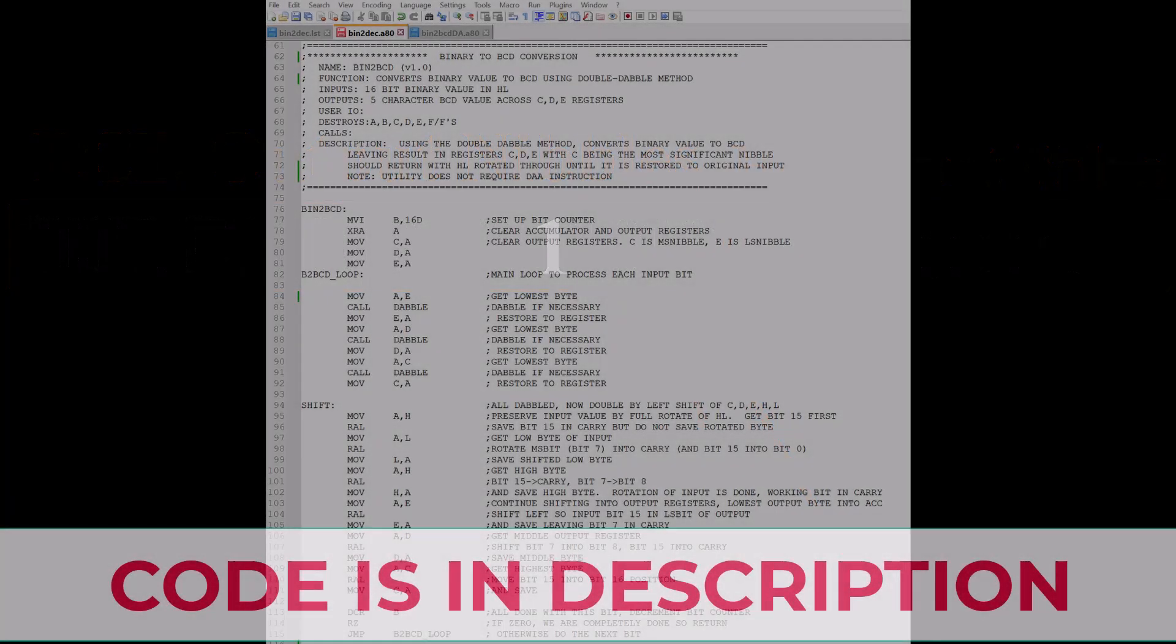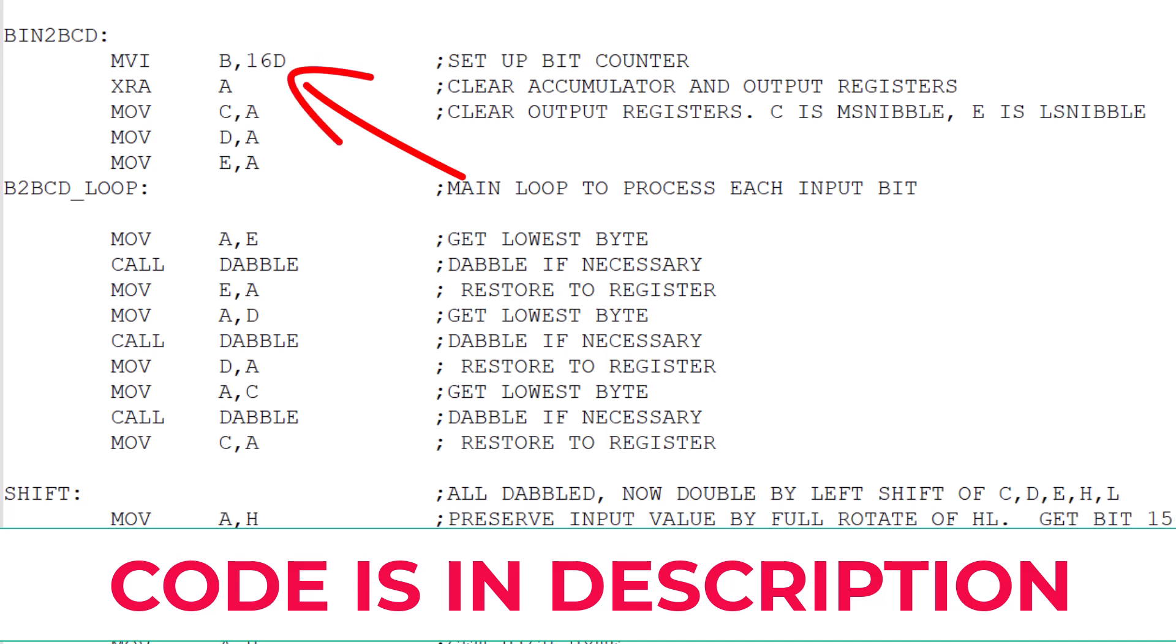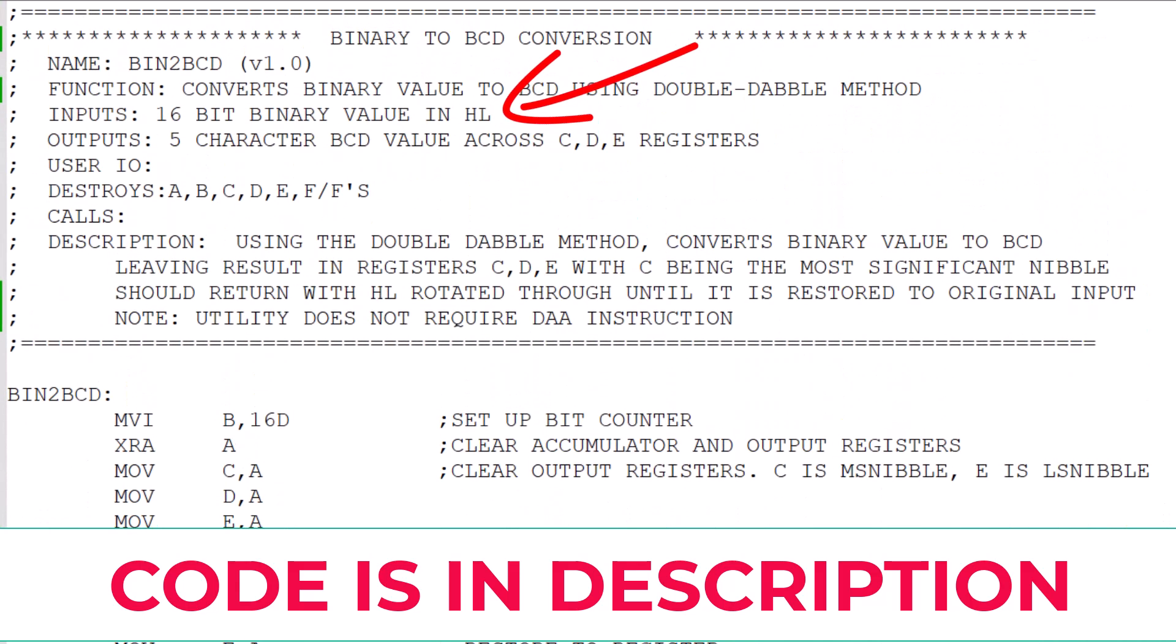So to set up the program, first, a bit counter is configured and the output registers are all clear. That's exactly the same as it was in the double and add. The utility received the 16-bit input value in the HL pair, just like before.